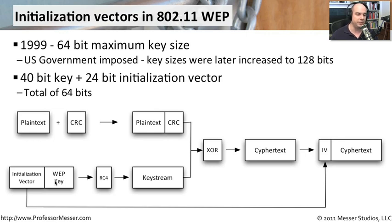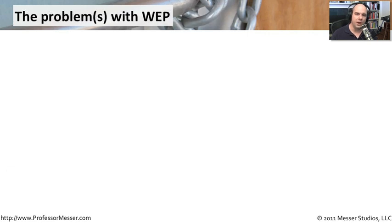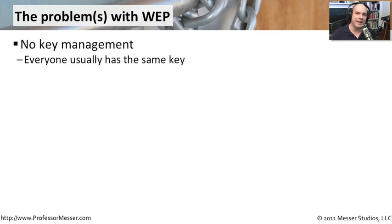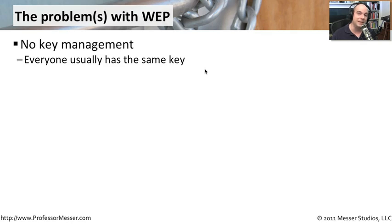This is also a challenge because we're sending the initialization vector in the clear. There are challenges in ensuring this encryption process is truly strong. If you've worked with WEP or implemented wireless encryption, one of the first challenges is that everybody has the same key. There was no requirement in WEP that keys change over time or that people could have different keys. So everybody tends to have the same key — meaning if someone leaves the organization, they take the key with them, and you'd have to change the configuration on every single wireless station.